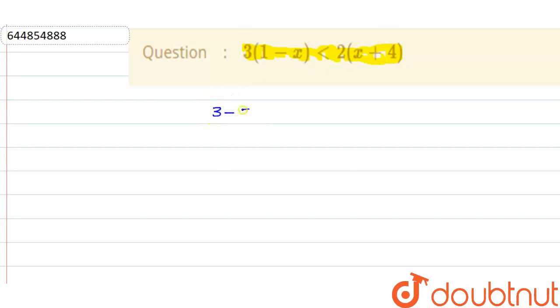So this is 3-3x < 2x+8. Now what you do is take out this -3x to the right side and take out this 8 to the left side.